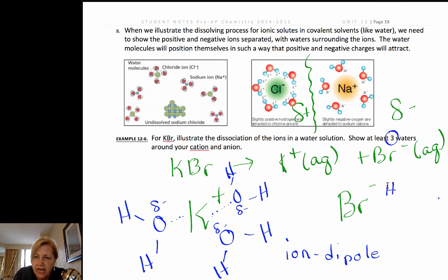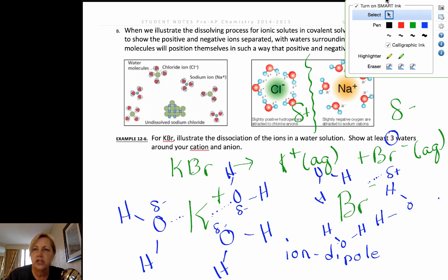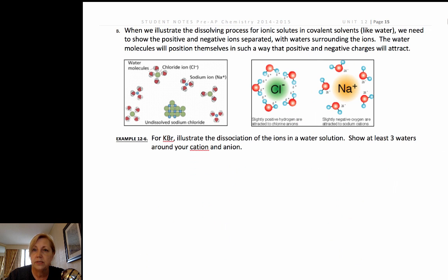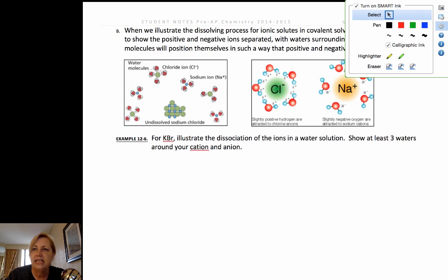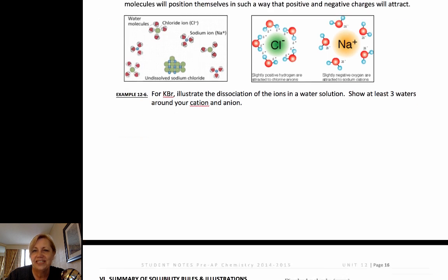For the bromide it would be the hydrogen end that would be attracted to the bromide. So I want to show at least three waters attracted around that bromide ion and it would look something like this with the partial positive of water being attracted to that negative charge on the bromide and again we would call that an ion-dipole attraction. So you need to be able to draw those so we'll get you some practice up on that in class and maybe we can be drawing on some tables. I know I like to do that, it gives us a little break.